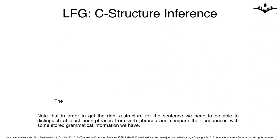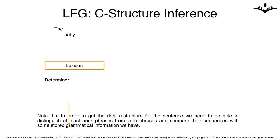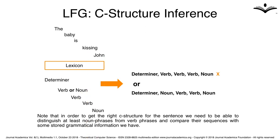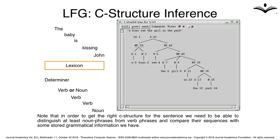Note that in order to get the right C structure for the sentence, we need to be able to distinguish at least noun phrases from verb phrases and compare their sequences with some stored grammatical information. This usually results in many cumbersome trees.